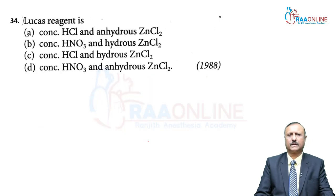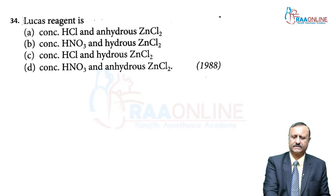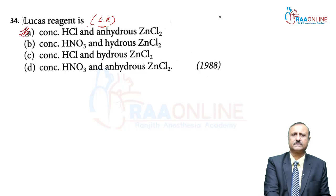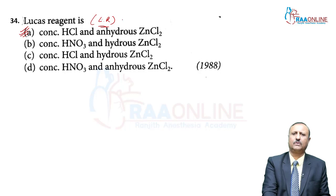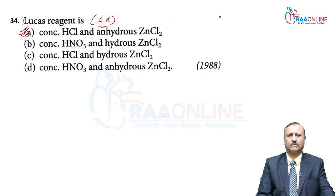Question 34 is straightforward: What is the Lucas reagent (LR)? Answer is option A — concentrated HCl and anhydrous ZnCl₂ together form the Lucas reagent. This reagent is used to differentiate between primary, secondary, and tertiary alcohols.